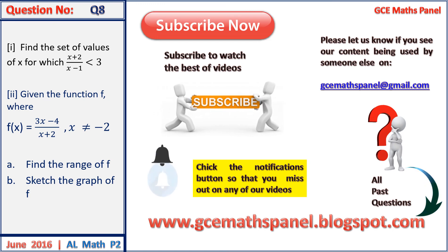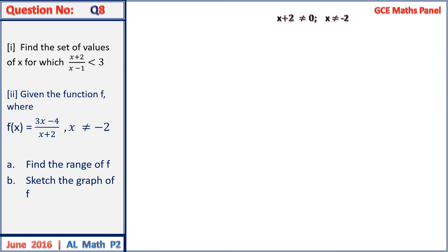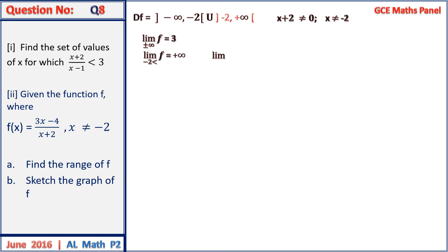For the curve sketching part, we start by finding the domain. Equating the denominator to 0, the domain excludes minus 2, so the domain is all real numbers excluding minus 2. Looking at the limits: as x tends to minus 2 from below, the limit is positive infinity, and as x tends to minus 2 from above, the limit is negative infinity. This tells us x equals minus 2 is a vertical asymptote.